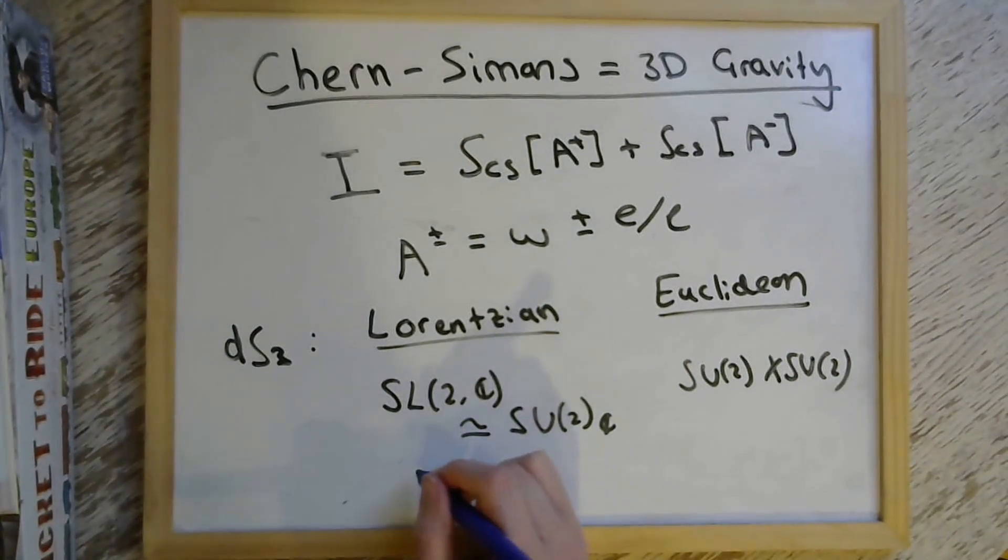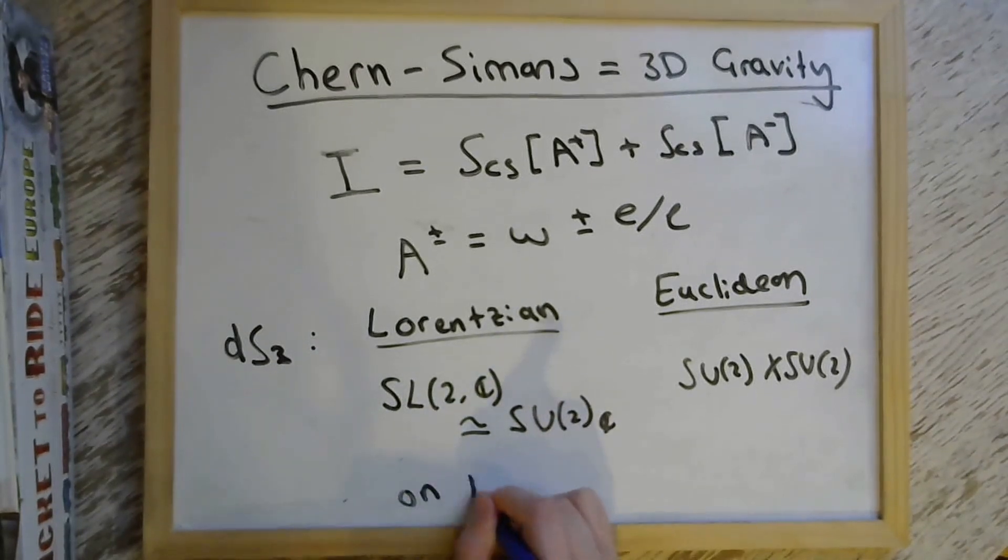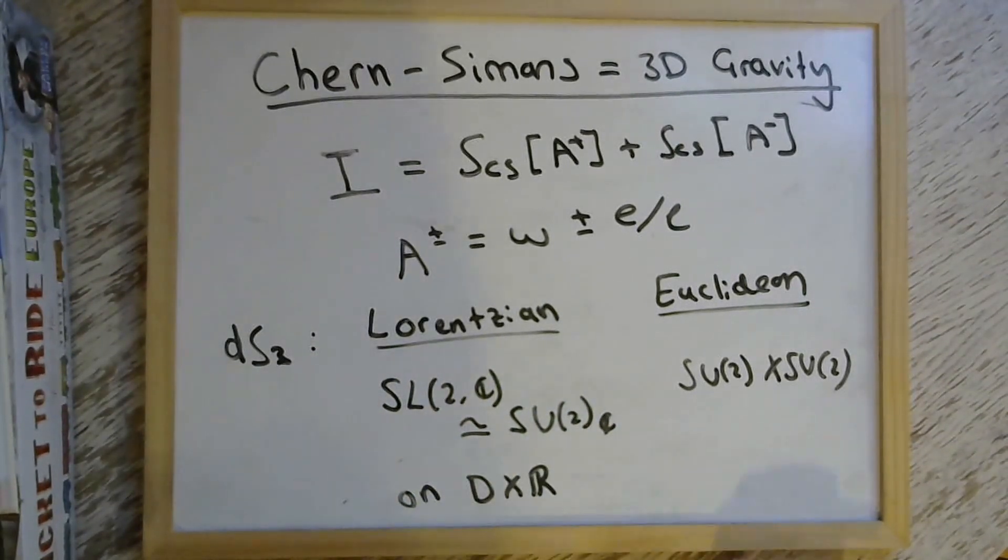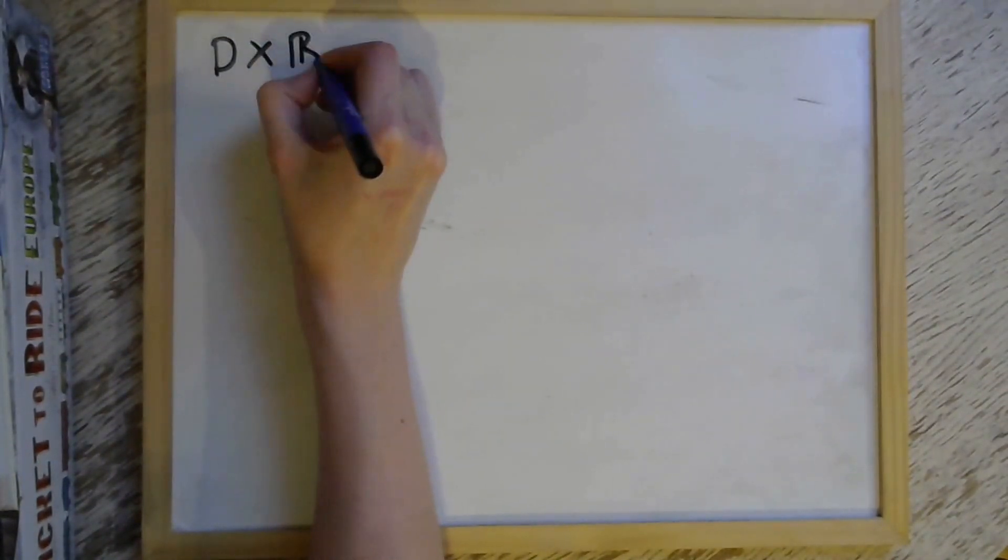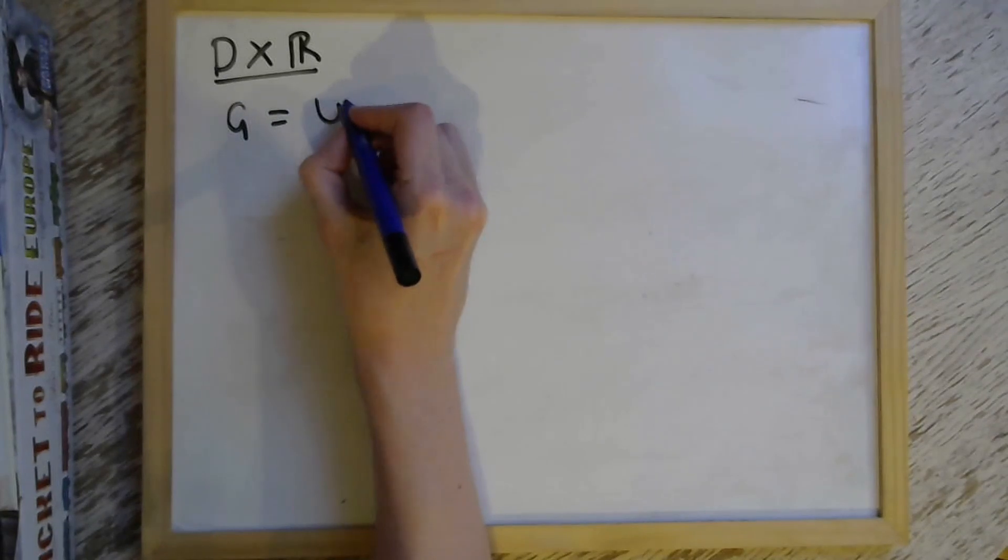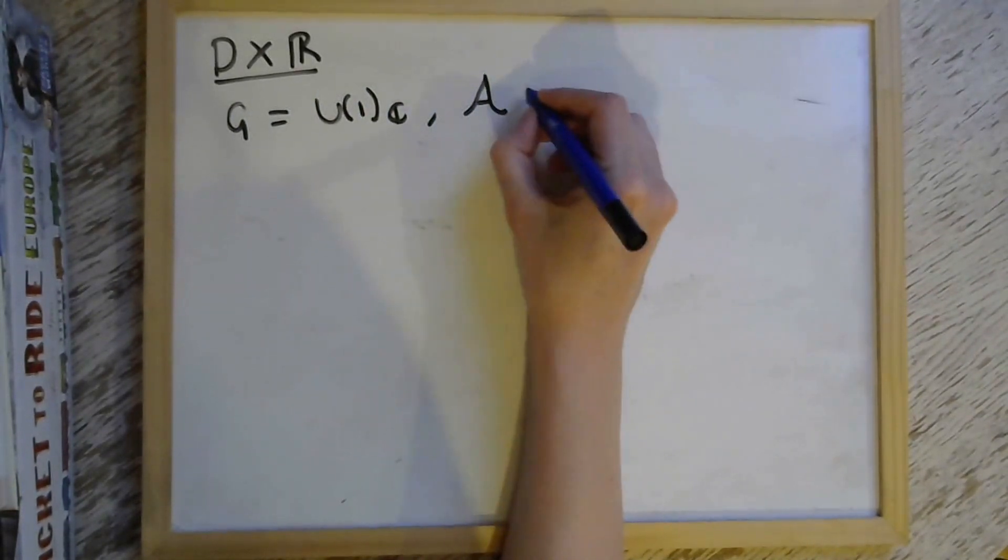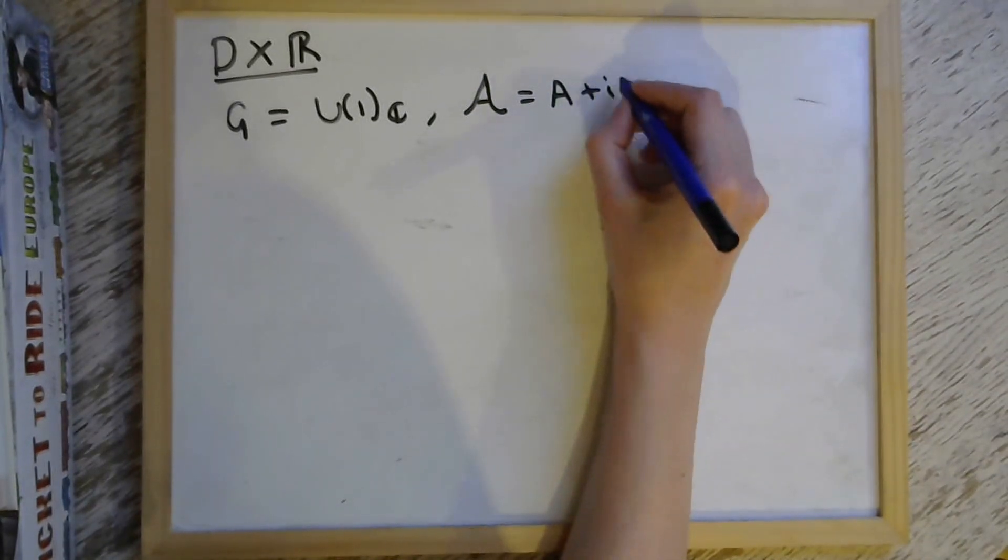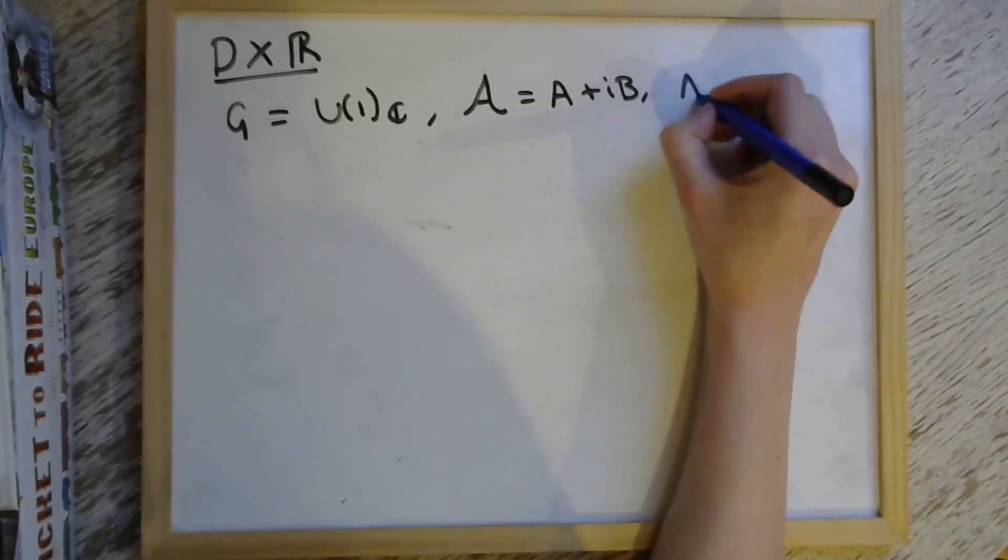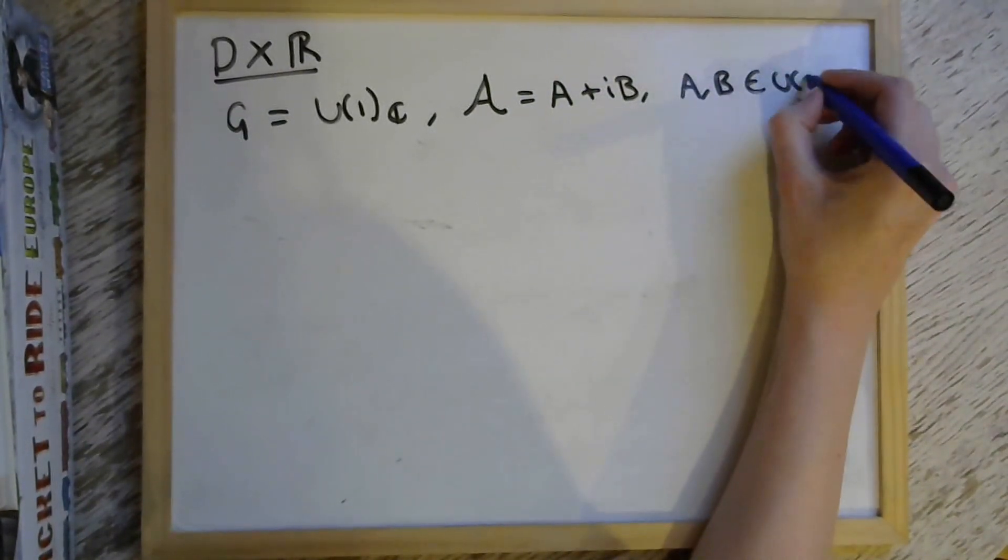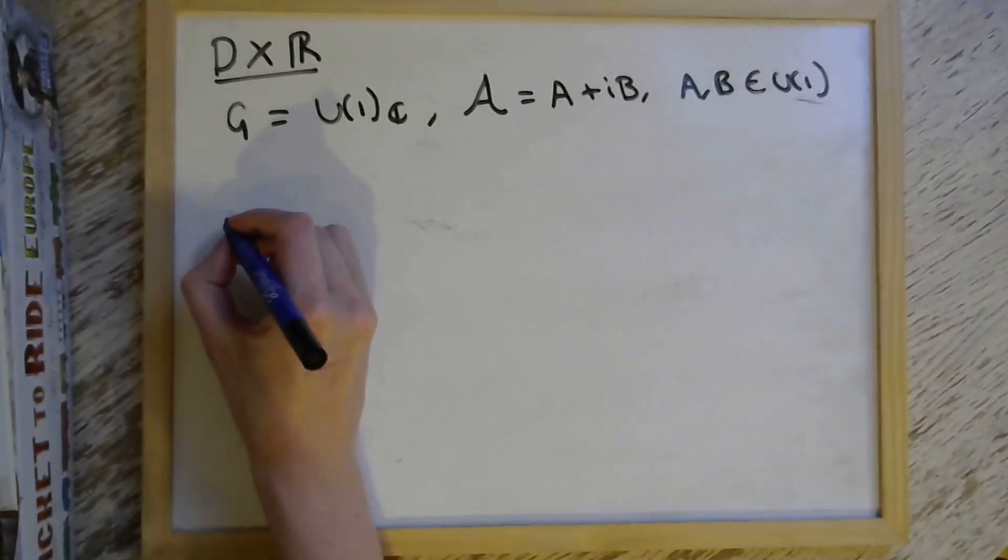So the idea is that we'd like to put this SL(2,C) theory on the disk times the real line and the two copies of SU(2) theory on the three sphere and see if we can find some relationship between the partition functions of the two. But this isn't very easy to do for the full non-abelian case. So we start with a simpler toy model, which is to take abelian gauge fields. So for the disk, we take instead a complexified U(1) instead of a complexified SU(2). And then the gauge field has this form where A and B are themselves real gauge fields in the Lie algebra of U(1).